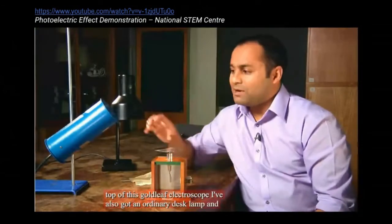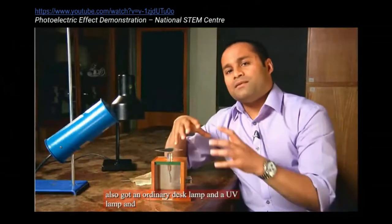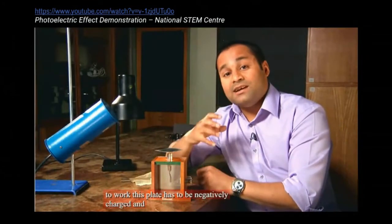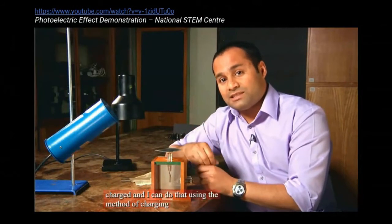I then place the plate on top of this gold leaf electroscope. I've also got an ordinary desk lamp and a UV lamp. Now, in order for the demonstration to work, this plate has to be negatively charged, and I can do that using the method of charging by induction.